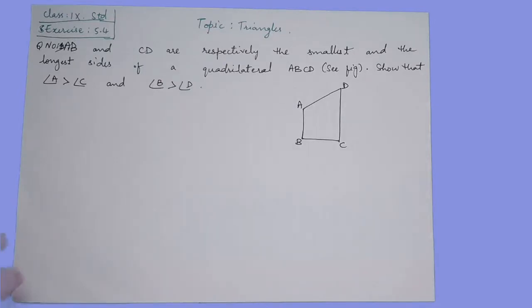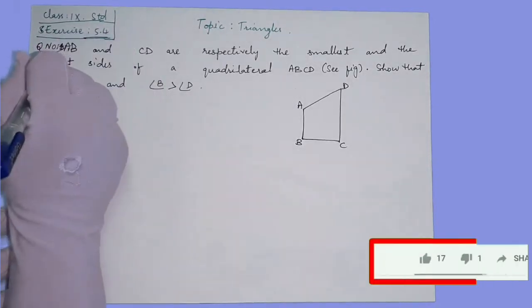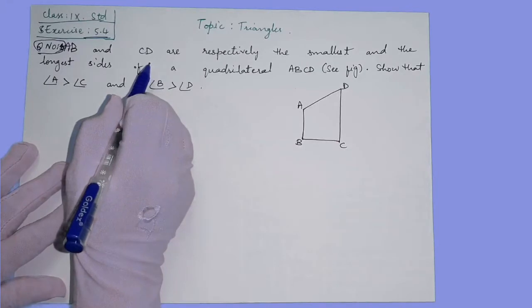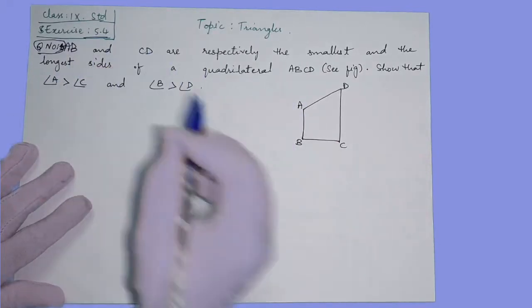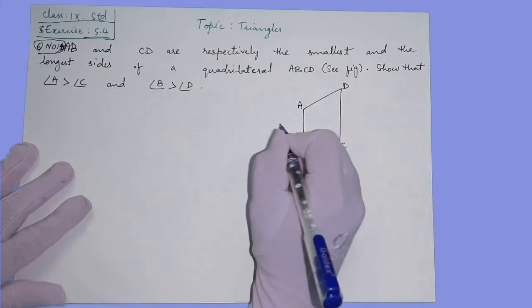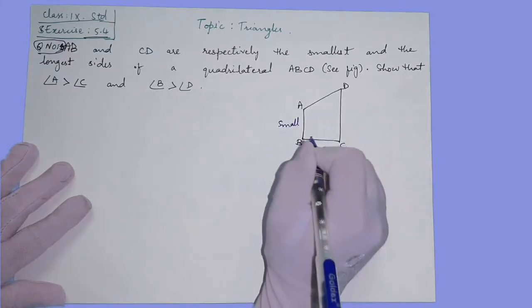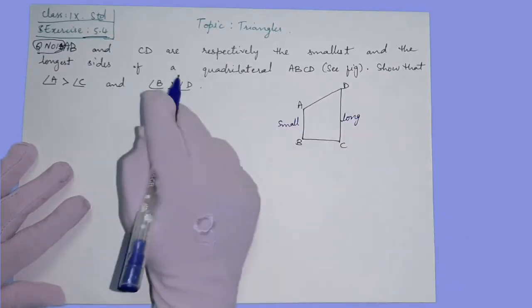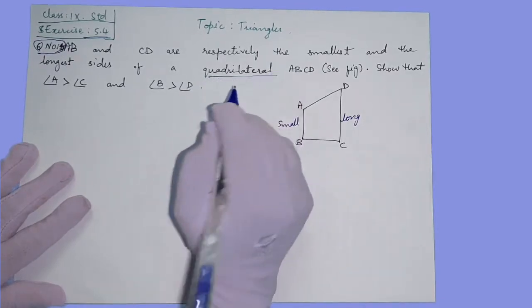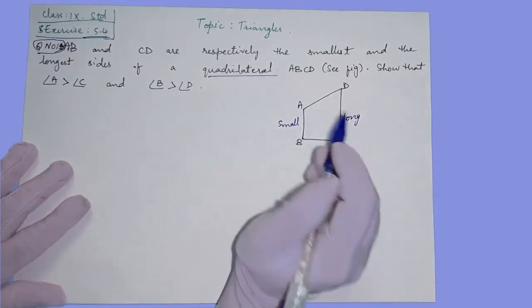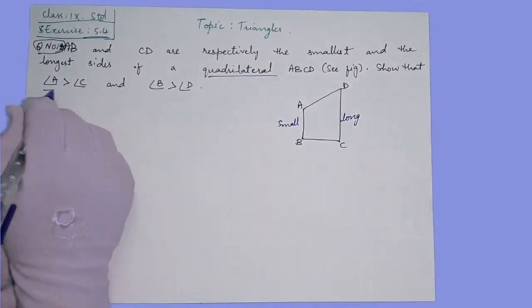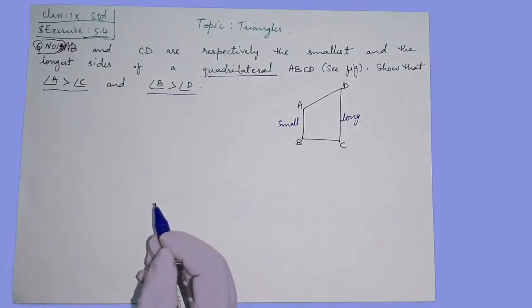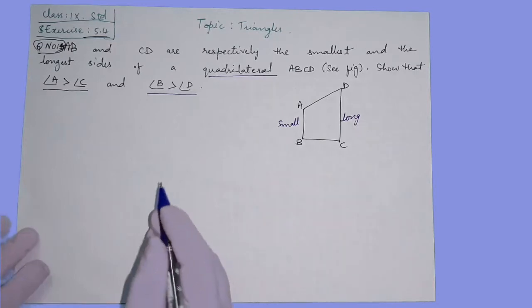Hello everyone, now the triangles exercise 5.4 question number 4. AB and CD are respectively the smallest and the longest side in a quadrilateral. AB is the smallest side and CD is the longest side. We have to prove that angle A is greater than angle C and angle B is greater than angle D. Let's start with the first solution.